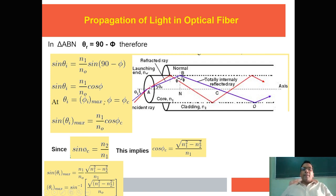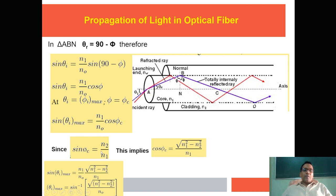In triangle ABN, the angle theta_r is equivalent to 90 minus phi, and this angle is 90 degrees. So theta_r = 90 − phi. Substituting, sin(90 − phi) = cos(phi). At theta_i maximum, phi equals theta_c (the critical angle). Using this condition, sin(theta_i_max) = (N1 / N0) × cos(theta_c). From the definition of critical angle, sin(theta_c) = N2 / N1.